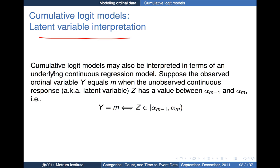There's another way of viewing these models: a latent variable interpretation. We can interpret these cumulative logit models in terms of some underlying continuous regression model. If we take that continuous regression model, the observed ordinal variable y equals m when the observed continuous response value z has a value between alpha m minus 1 and alpha m.